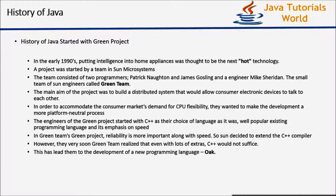The history of Java started with the Green Project. Sun Microsystems started a project called Green Project in the early 1990s with three Sun engineers: Patrick Norton, James Gosling, and Mike Sheridan. This small team of Sun engineers is called the Green Team. The main aim of this team was to develop a distribution system which provides communication between electronic devices. The problem with electronic devices is they generally change their platforms and chipsets very frequently. So the main aim of this project was to build once and run on all platforms. Sun Microsystems' Green Team decided to use C++ to develop this project.